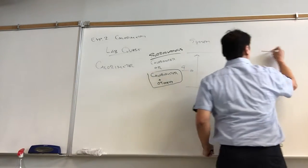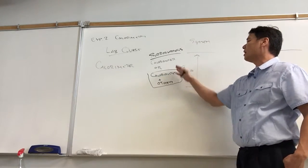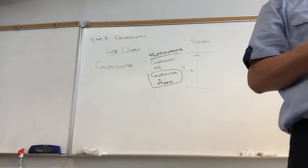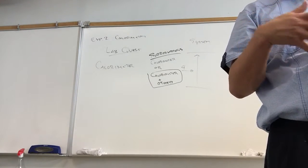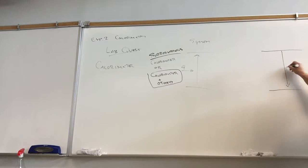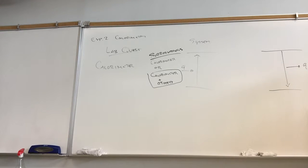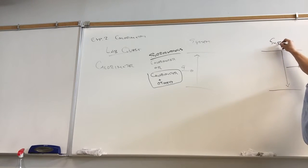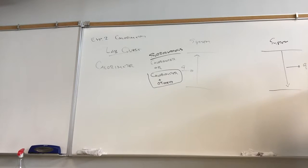Any heat the system absorbs is going to come from the calorimeter plus other stuff. The calorimeter is controlled, so we aren't subject to variations in each lab. Similarly, if there's heat output, we output that heat into the calorimeter plus other stuff. The calorimeter contains and controls things — this is going to be our system, and our surroundings will be the calorimeter.